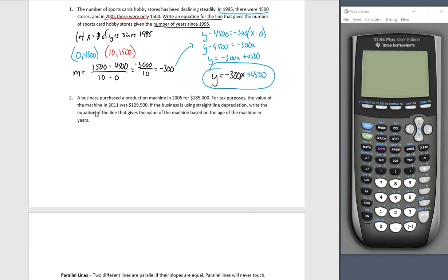A business purchased a production machine in 2005 for $185,000 for tax purposes. The value of the machine in 2011 was 129,500. If the business is using straight line depreciation write the equation of the line that gives the value of the machine based on the age in years. So let's let x be the age of machine.